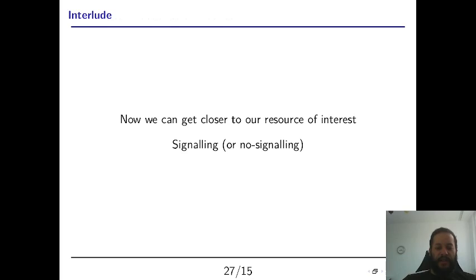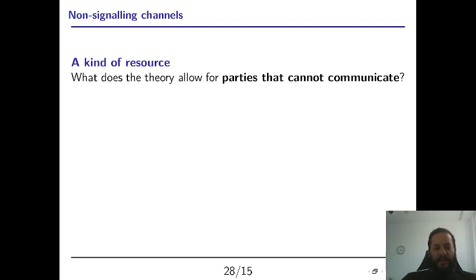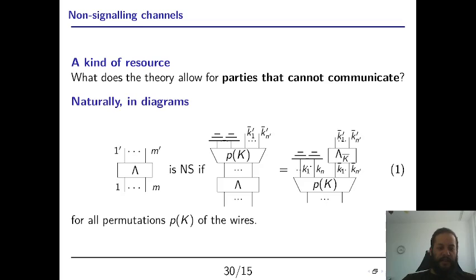Now this is how we can characterize these no signaling channels that I was talking to you about. So when the theory does not allow two parties to communicate, how do we formalize that mathematically? Well, if you are using GPTs you can use the diagrams and say that some process lambda cannot be used to send information between the people there.